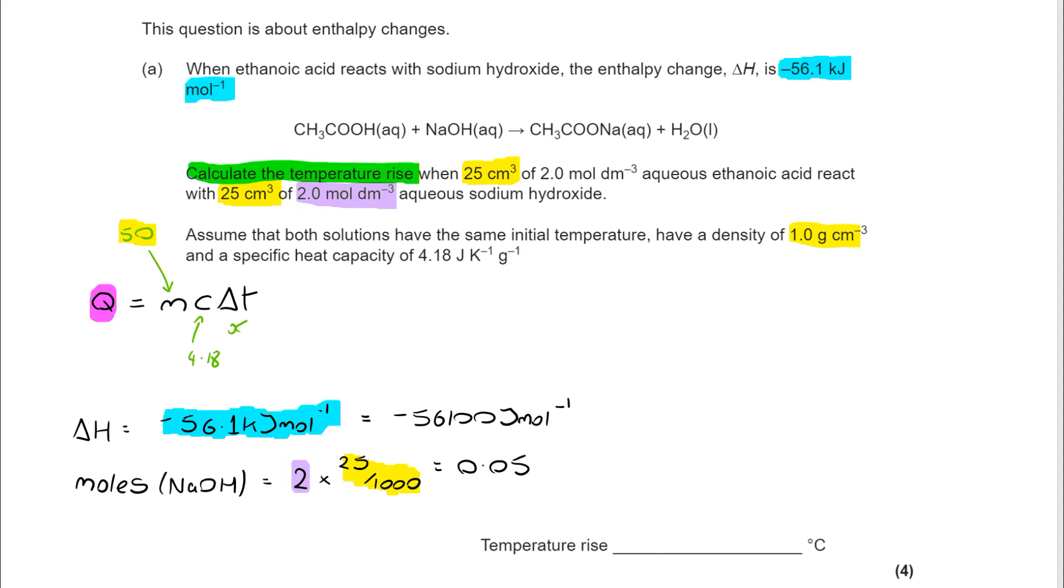If I know how many joules per mole, and I know how many moles, I can work out that my total energy change for the 0.05 moles is 2,805 joules.